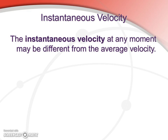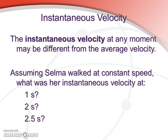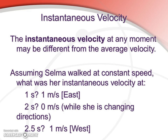This gets us to a different definition: instantaneous velocity versus average velocity. The instantaneous velocity may never be the same as the average velocity. We can look at Salma walking at constant speed and examine her instantaneous velocity. She walked east for two seconds — so at one second, her speed was one meter per second east. At two seconds, she was actually changing directions, so we can argue that at precisely two seconds her speed was zero meters per second. Then for the last second, she was traveling west at one meter per second. So the instantaneous velocity can be very different from the average velocity.